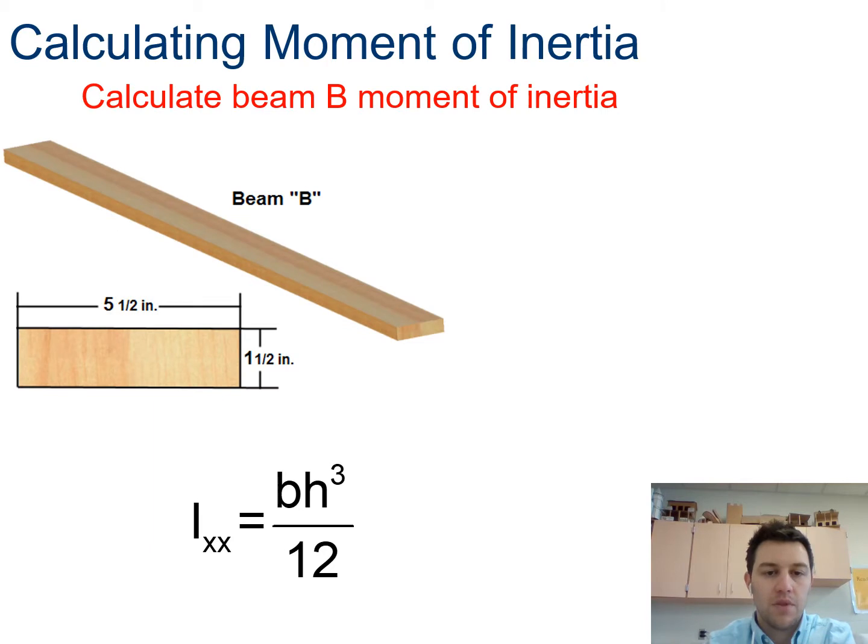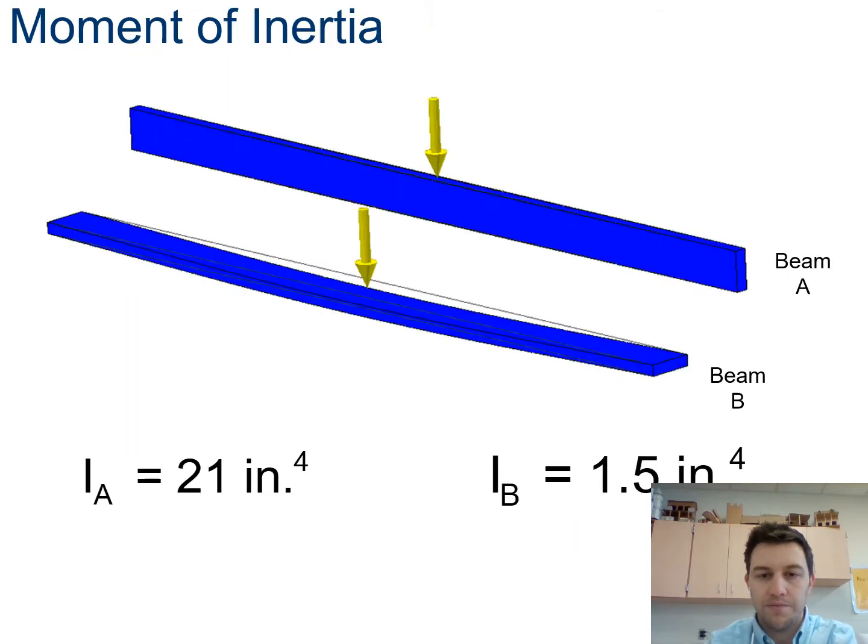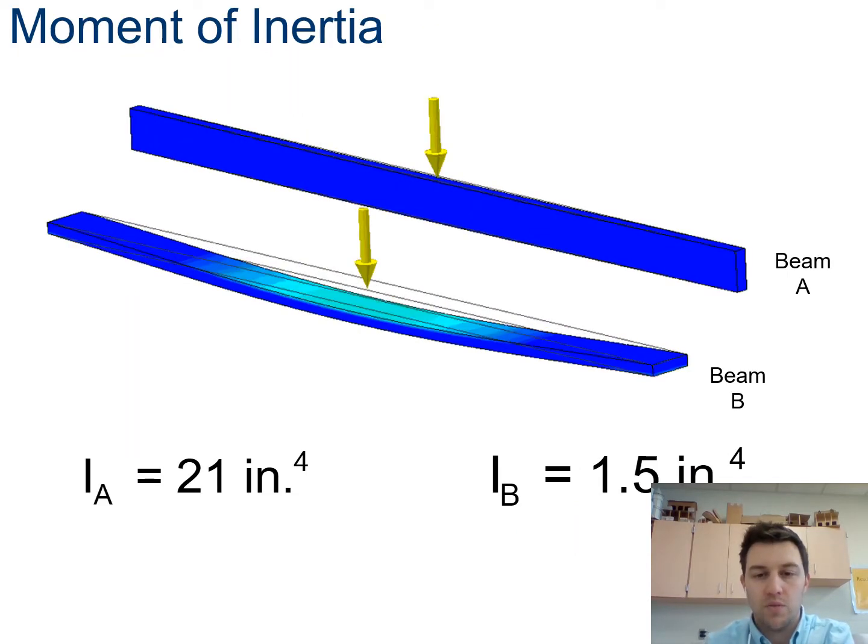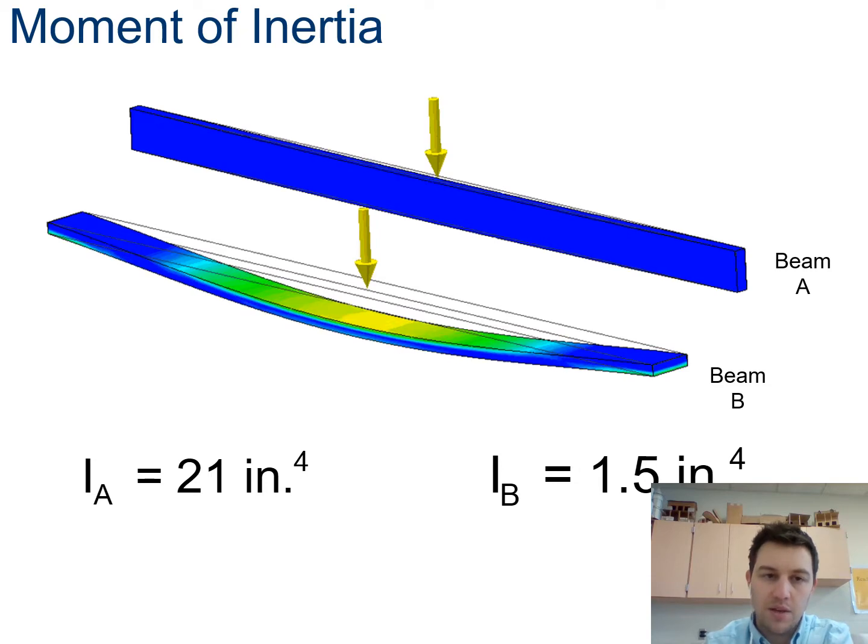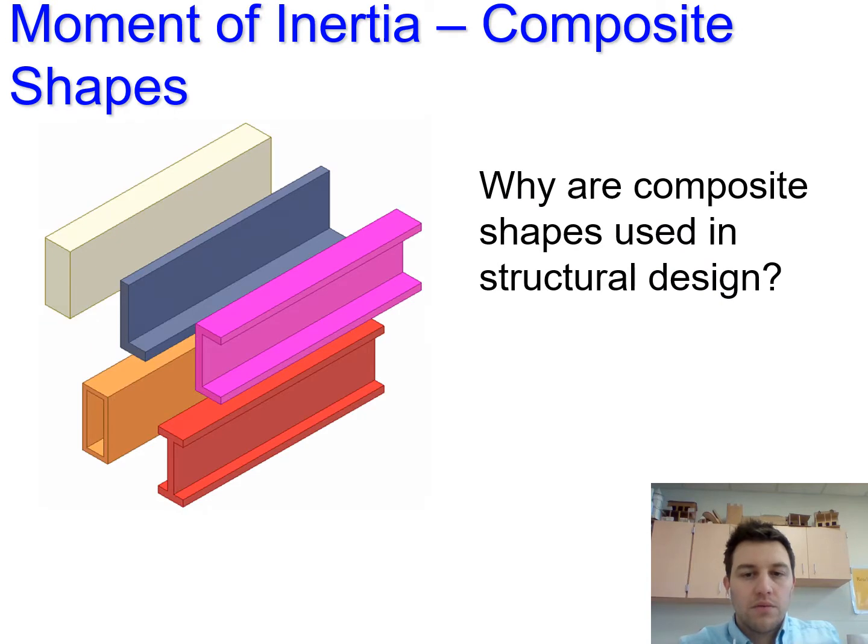When I flip beam B and now it's laying on its side, now my base is the five and a half inches and my height is only one and a half inches. So because the height cubed is such a smaller number, my moment of inertia ends up being a much smaller number as well. So when I compare 1.5 inches to the fourth to my previous 21 inches to the fourth, that's a pretty significant difference. So that's why there's so much more deflection in beam B. My moment of inertia is significantly less. 14 times less, in fact.